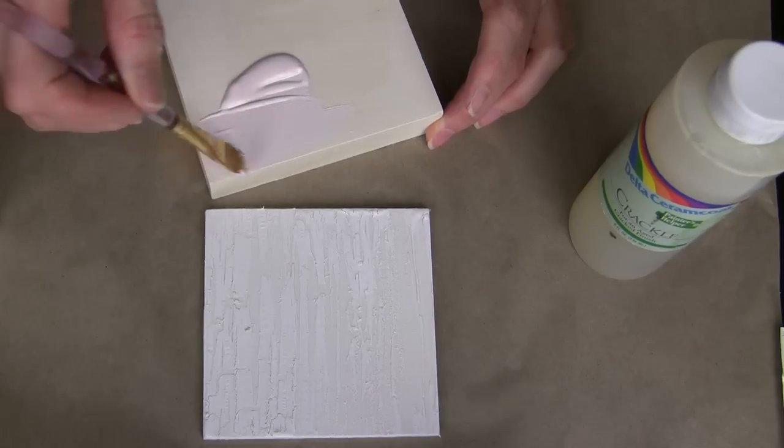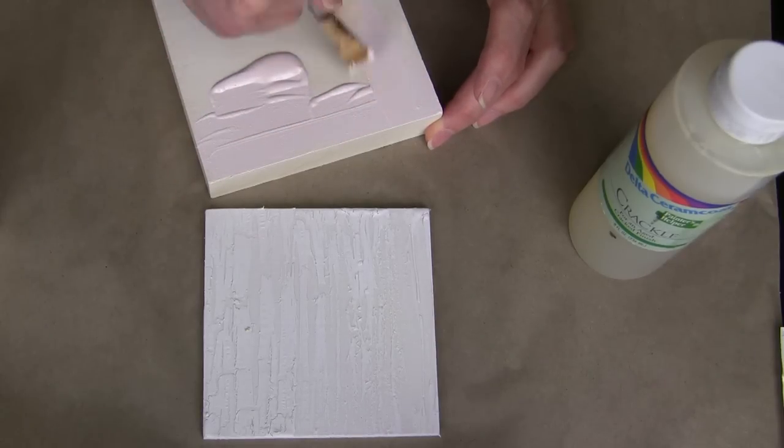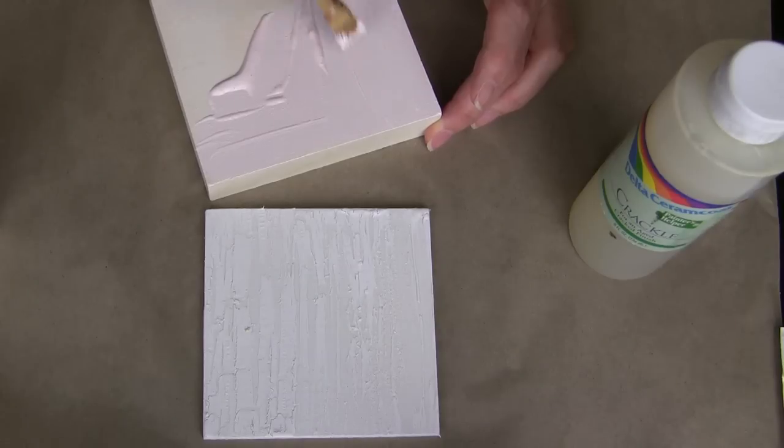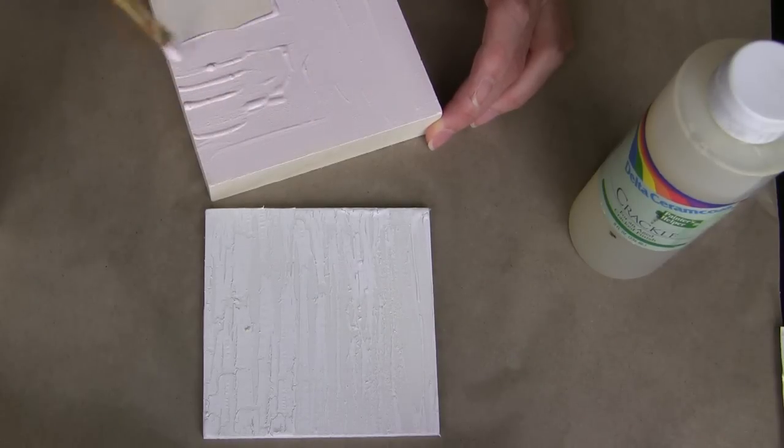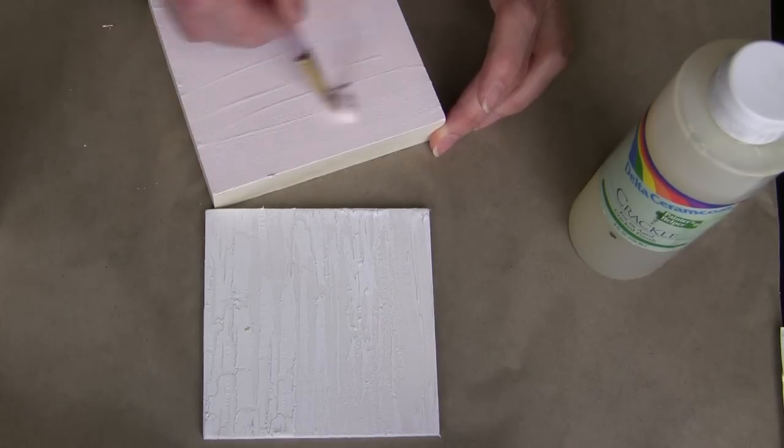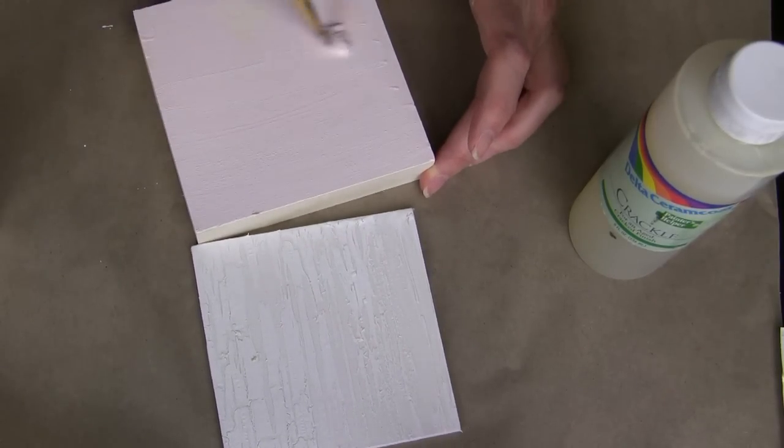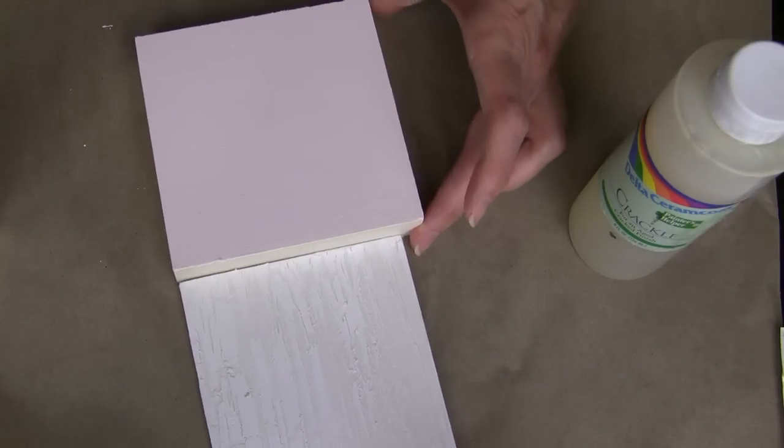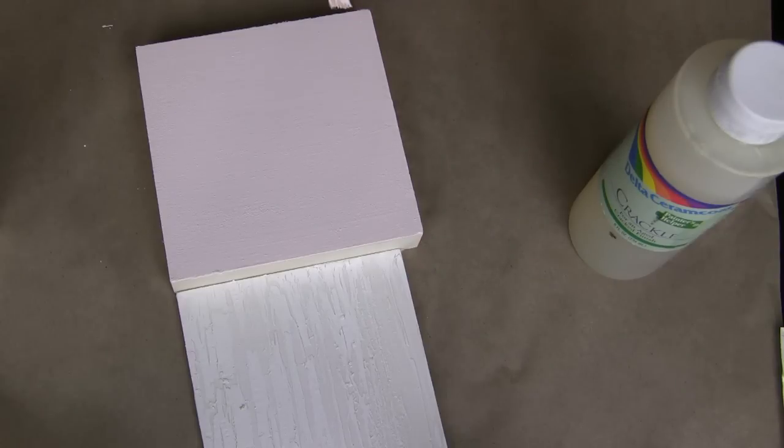The first step is to paint the base coat on. And all of these instructions would be on your bottle of crackle. So be sure and follow whatever label instructions that you have for whichever crackle you are using. But what you're going to do is you're going to base coat this completely. This will end up being the background color for your crackle. And so keep in mind that you might want to do bolder colors for more contrast. I am going to let this dry completely before I go on to the next step.